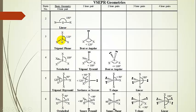For steric number three, trigonal planar is the basic geometry — the one produced when there are no lone pairs on the central atom. For steric number four, tetrahedral is the basic geometry. Notice this wedge means that atom is coming out of the screen, and that one is going behind the screen.